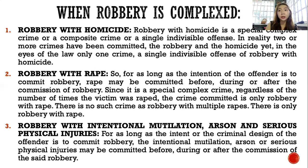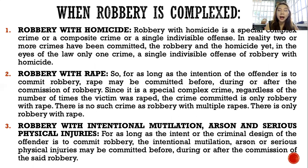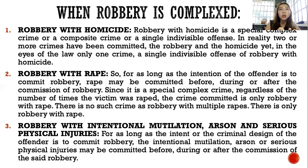When is robbery complex? Robbery with homicide is a special complex crime, or a composite crime, or a single indivisible offense. It is not under Article 48 because it provides for its own penalty. In reality, two or more crimes have been committed — the robbery and the homicide — yet in the eyes of the law, there is only one crime: the single indivisible offense of robbery with homicide.